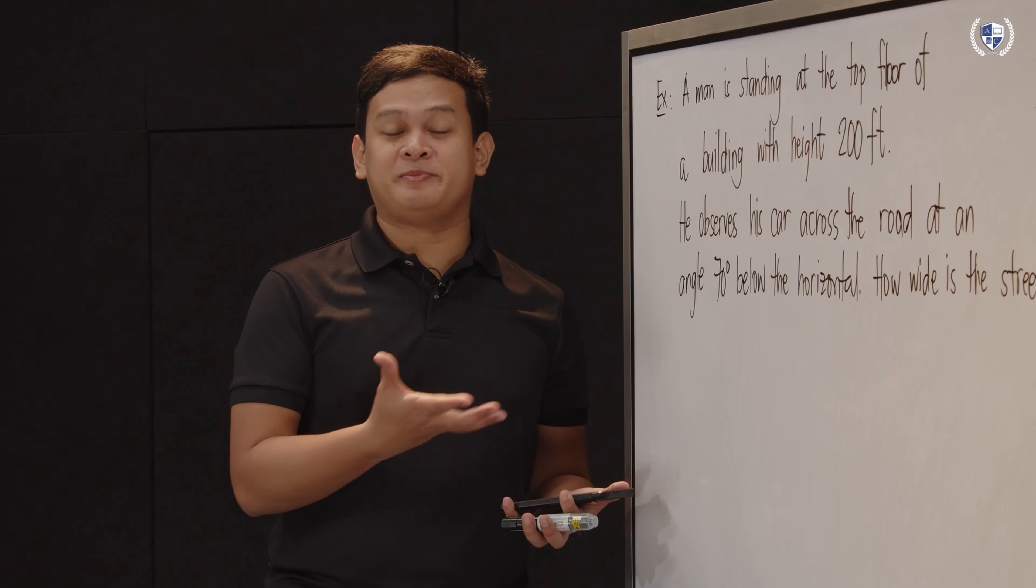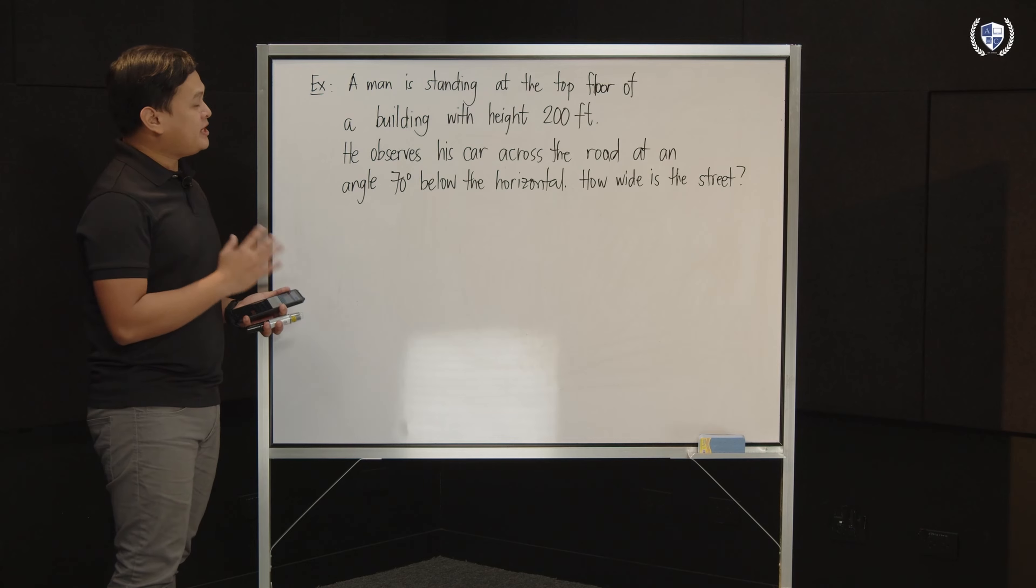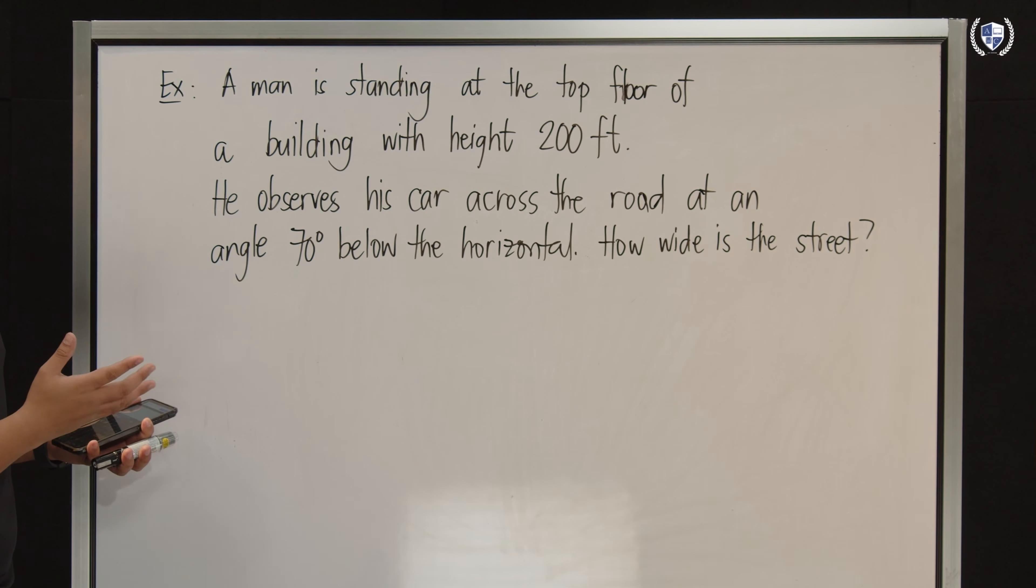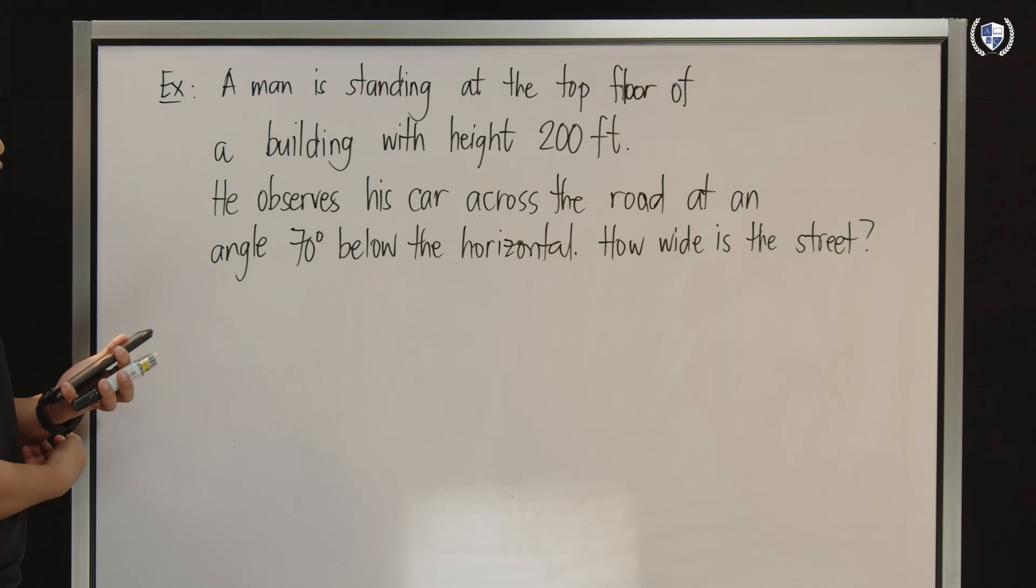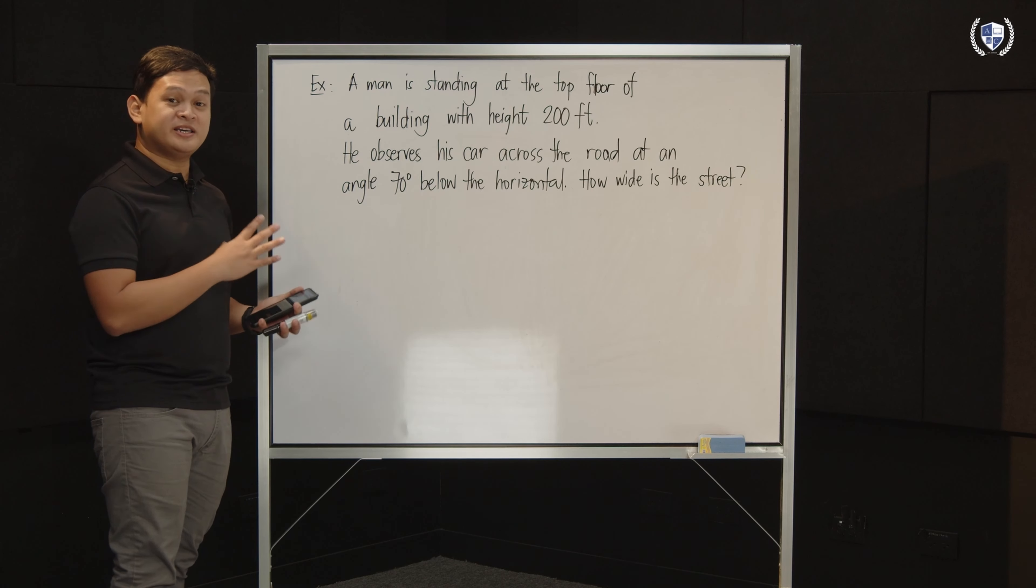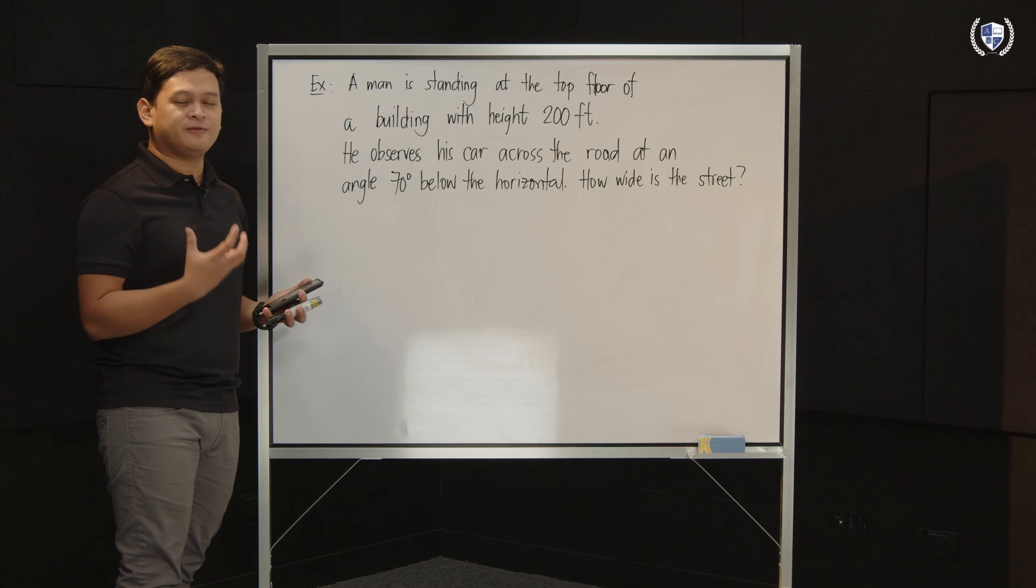To have a better understanding, we have an example here. Our word problem is: A man is standing at the top floor of a building with height 200 feet. He observes his car across the road at an angle 70 degrees below the horizontal. How wide is the street? Let's analyze the given in this problem and verify if this problem really involves angle of depression.